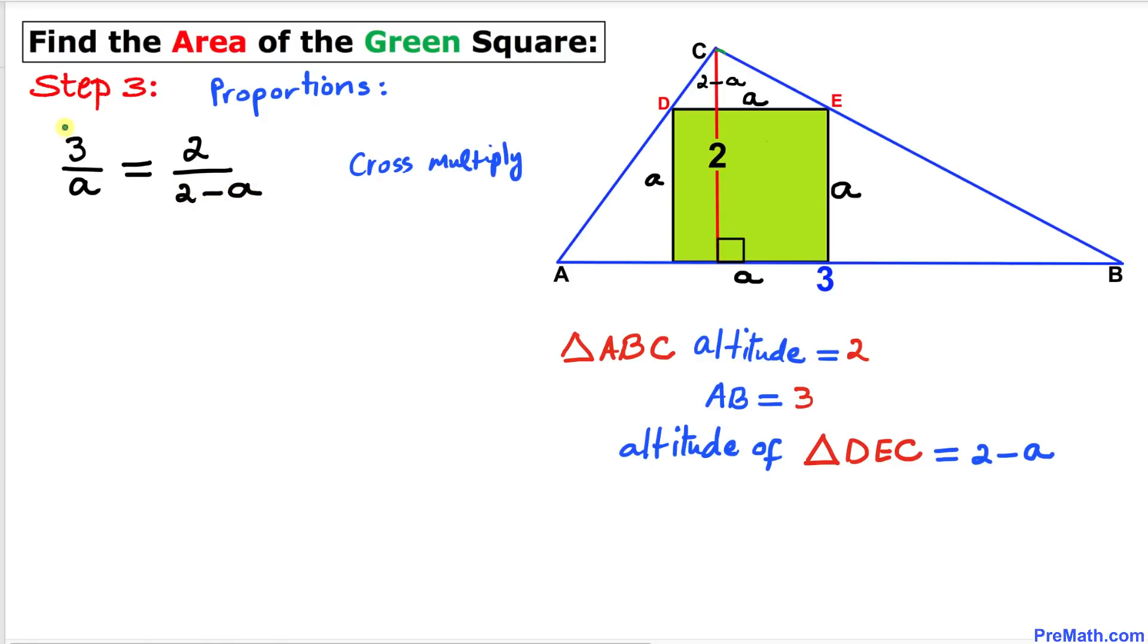Now we're going to cross multiply to remove these fractions. That gives us 3 times 2 minus A, which makes 6 minus 3A equals 2A. Let's add 3A on both sides. We end up with 6 equals 5A.